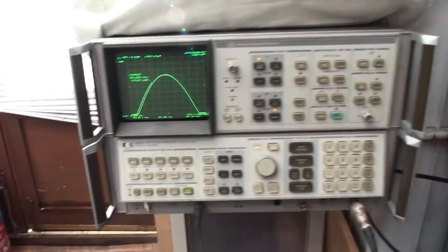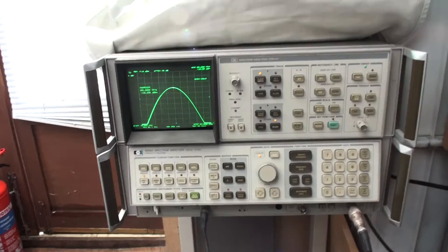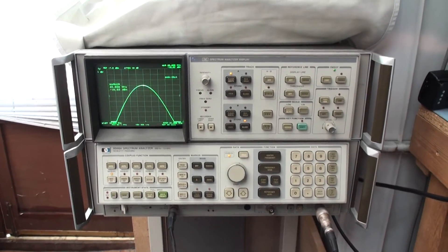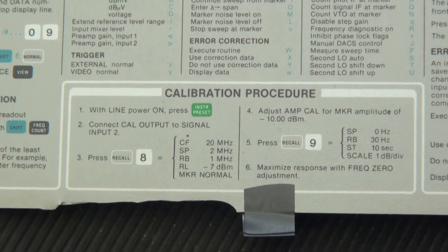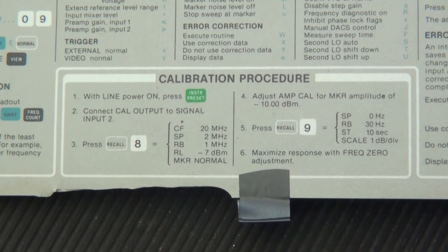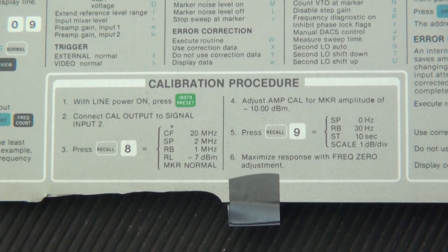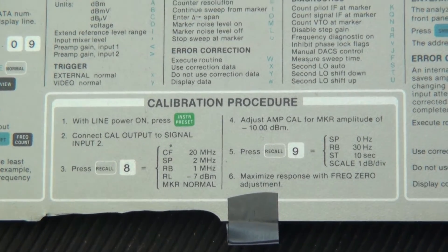Of course the cover's off the machine a moment. So let's find a calibration routine and we'll see what that does. Now here's the procedure of running the calibration routine. I've done the recall 8 and we've got the minus 10 dB back, which is good. Then we recall 9.